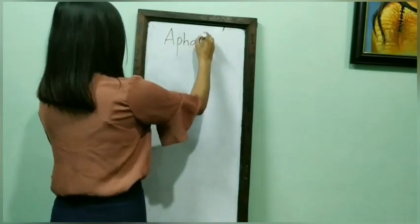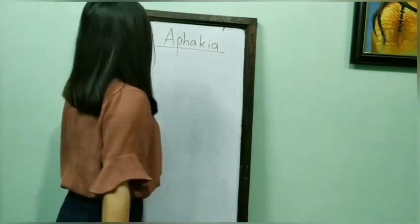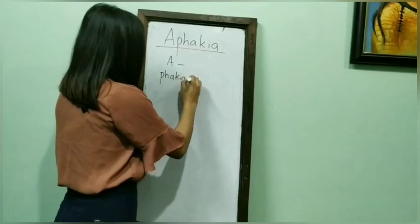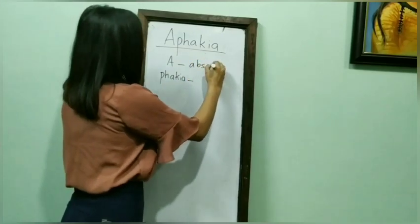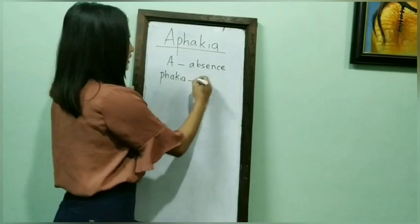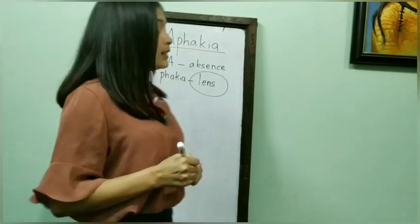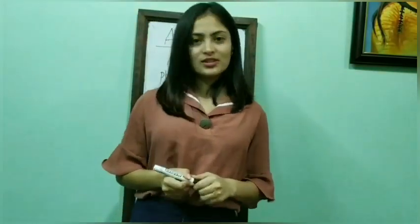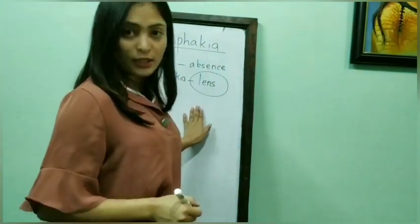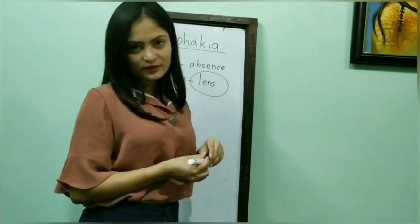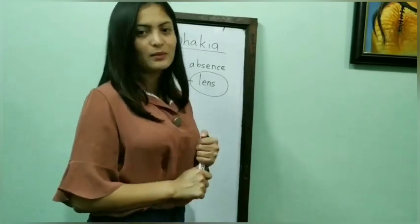Hello everyone, today we will be talking about Aphakia. Dividing this word into two parts: 'A' and 'phakia.' 'A' means absence or without, and 'phakia' means lens. The lens is a transparent crystalline structure of the eye, composed of flexible tissue, located behind the iris and the pupil. After the cornea, it is the second part of the eye and it helps us to focus light and images on the retina.